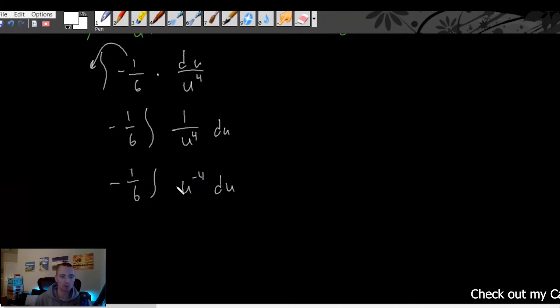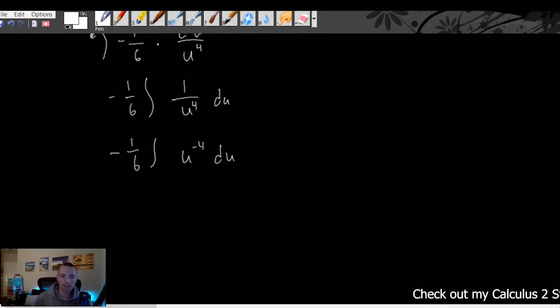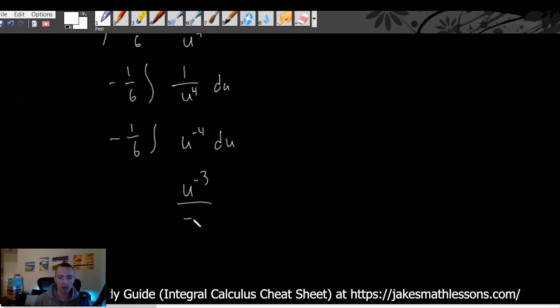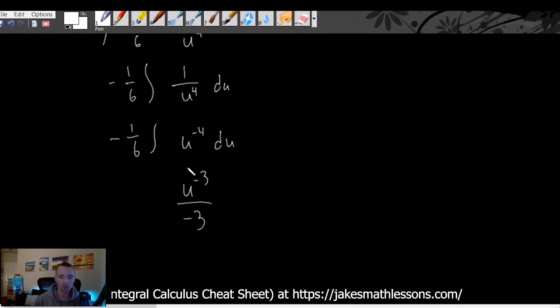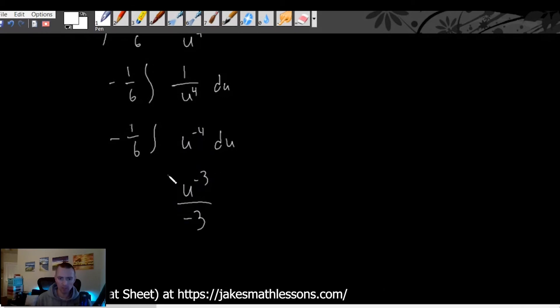So now this is the integral we're trying to evaluate. Well the reason why that's easier is now we have this in a form where we can actually just use the power rule to evaluate it. Well the power rule for integration just says that we're going to raise our power by one, well negative four plus one is negative three, and then divide by our new power. So this is going to be the anti-derivative of u to the negative four, which means at this point we have actually evaluated the integral and integrated this integral.